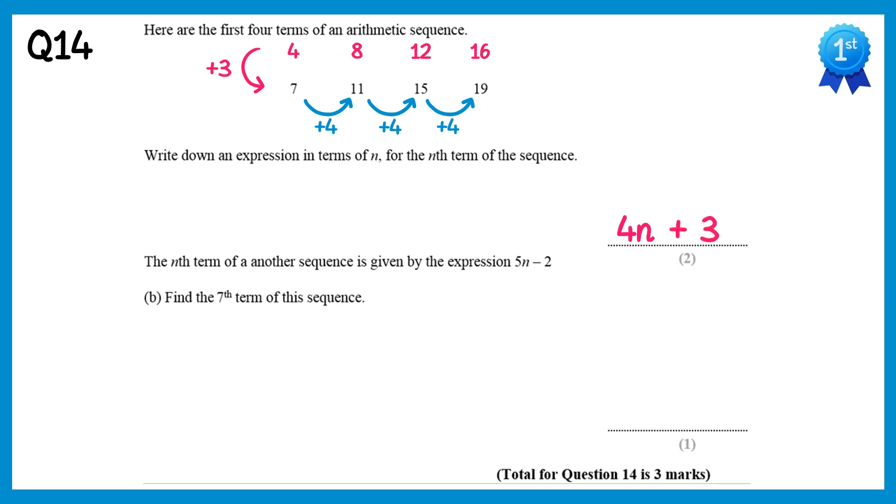For part b of this question we're going to write 5n minus 2 again, but instead of n, substitute 7. So it's 5 times n, so 5 times 7, take away 2. 5 times 7 is 35, and then take away 2 is 33.